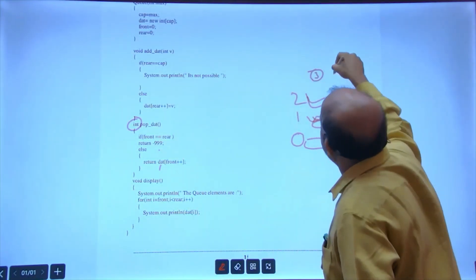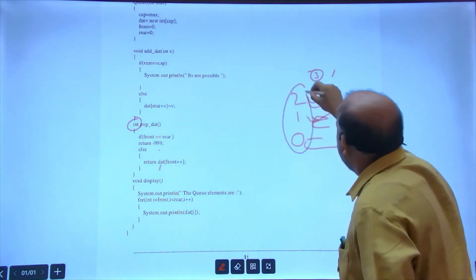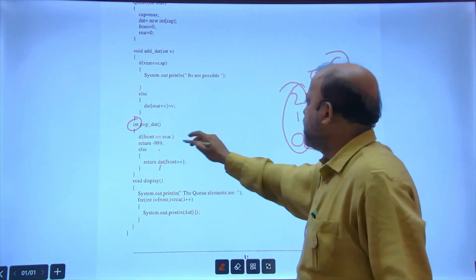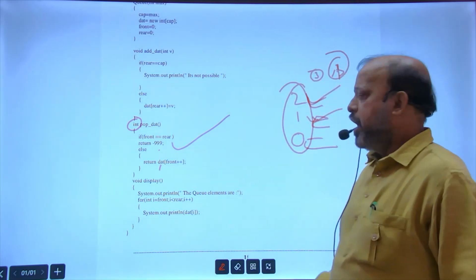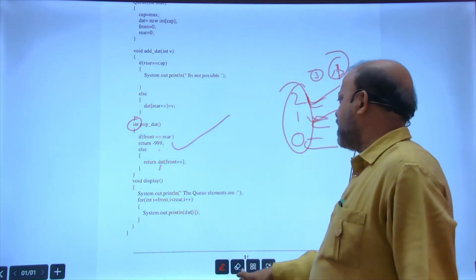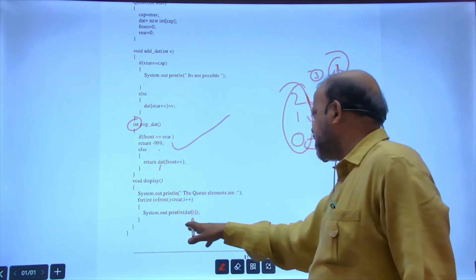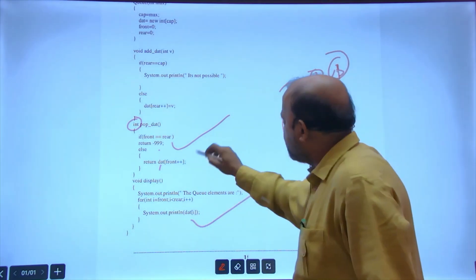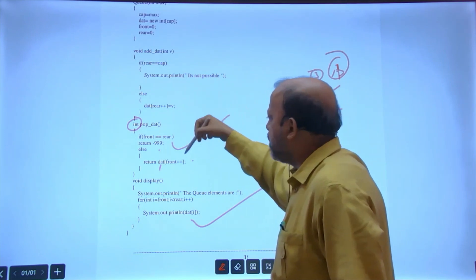Otherwise front++, meaning zero returns and front becomes one, one returns and becomes two, two returns and becomes three. If three elements are there, after returning all, front and rear both will be same. Both same, return minus 9. In display, loop from front to rear, all elements print. We have used postfix - note that both places postfix is used.